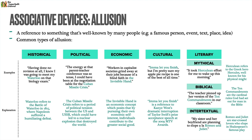Finally, literary allusion has three main buckets: mythical allusion, biblical allusion, and intertextual allusion. A mythical allusion: 'It took Herculean effort for me to wake up this morning' — Herculean refers to the Greek hero Hercules, well known for his physical might. Biblical allusion: 'The teacher pinned up her version of the Ten Commandments in our classroom' — the Ten Commandments being the cardinal rules God set out for man in the Bible. Intertextual allusion refers to famous literary works: 'My sister and her boyfriend are planning to elope a la Romeo and Juliet' — Romeo and Juliet being the star-crossed lovers in Shakespeare's famous play.